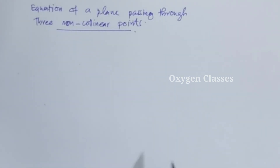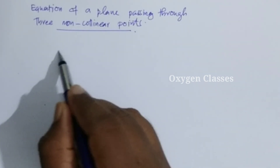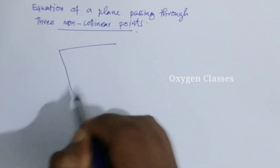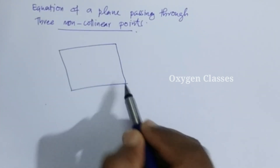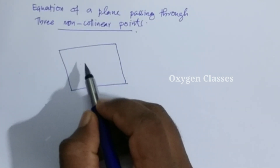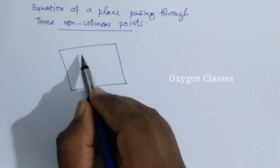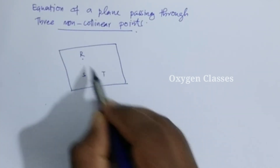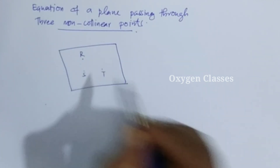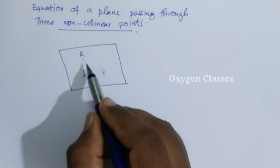This section covers how to find the equation of a plane passing through three non-collinear points. The three points are R, S, and T. These are three non-collinear points and we have to start from here.